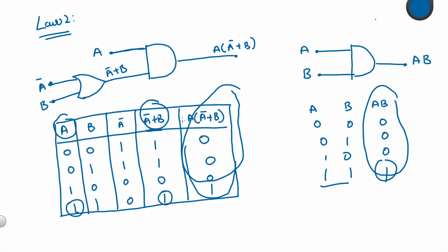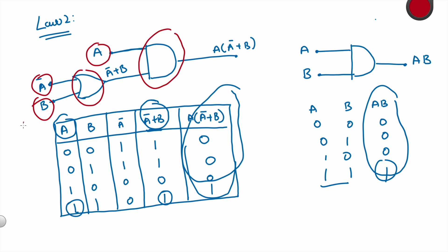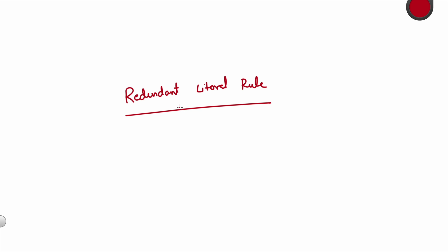So it simply states that the ANDing of a variable with the OR of the complement of that variable with another variable is the same as ANDing that variable with the other variable. In the first law we are ORing the variable with the AND of the complement, and in the second law we are ANDing the variable with the OR of the complement. I hope this helped you gain an understanding of the Redundant Literal Rule. Thank you so much for watching, have a lovely day ahead — and if you have an exam tomorrow, all the very best!